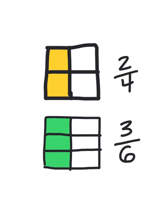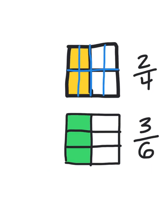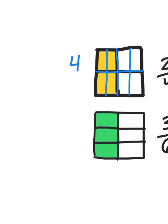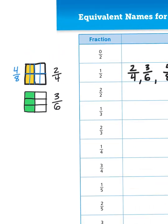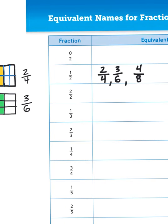And that works out to be true because if I were to divide this again, my 4 parts have become 8 parts. If I count the number of parts that are yellow, I have 4. So 2 fourths is the equivalent of 4 eighths, which is all equivalent to 1 half.